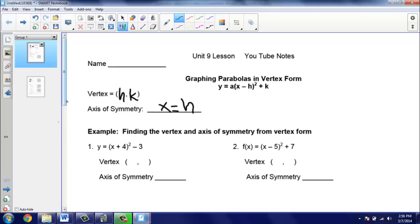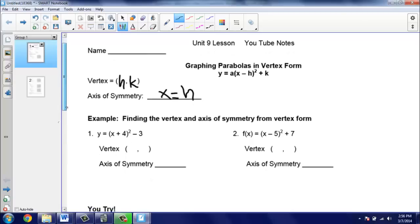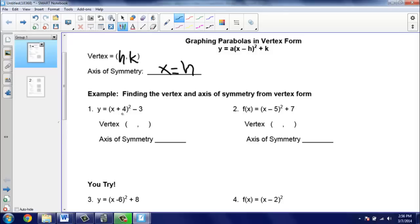So let's take a look at some examples using this. Here you're given an equation in what we call vertex form, and we just want to identify the values for the vertex and the axis of symmetry. So remember for the vertex, for that h, because we have that subtraction sign here in the formula, we're going to have to switch the sign. So the 4 here is positive, so when we write it down for our vertex it's going to be a negative 4.